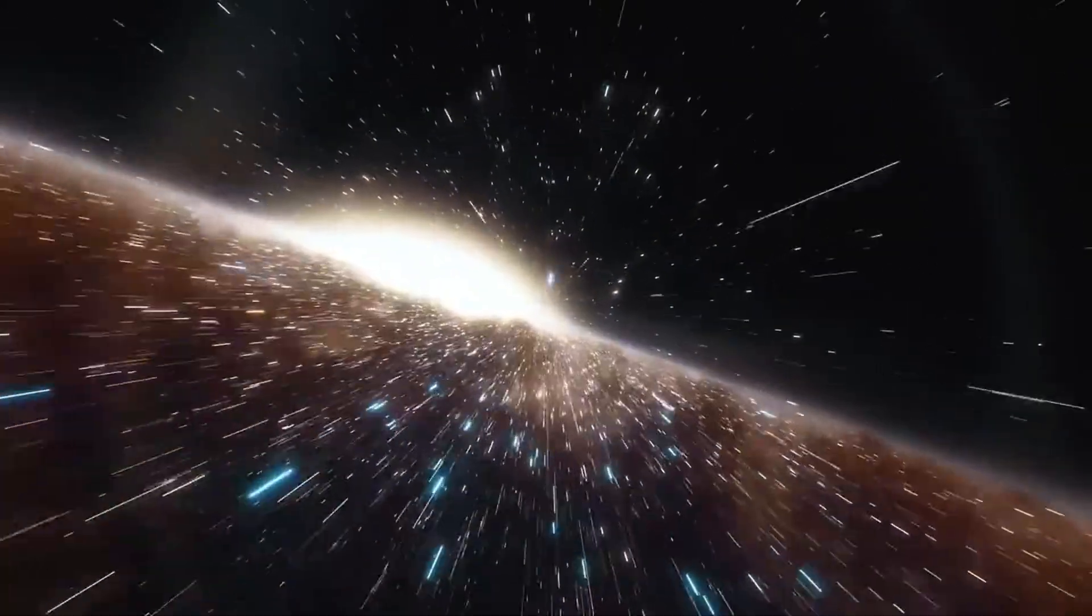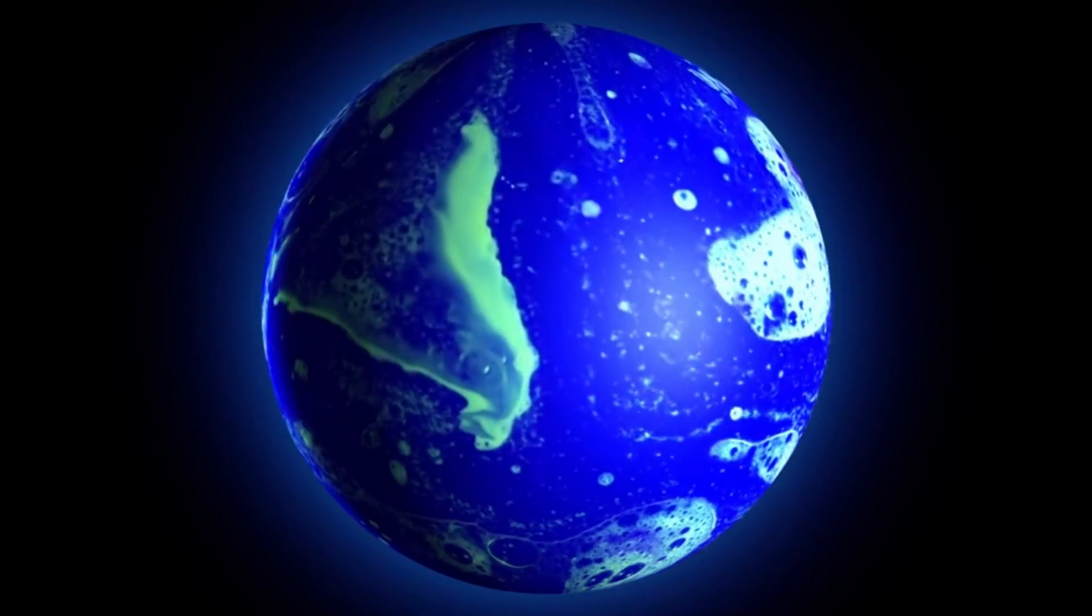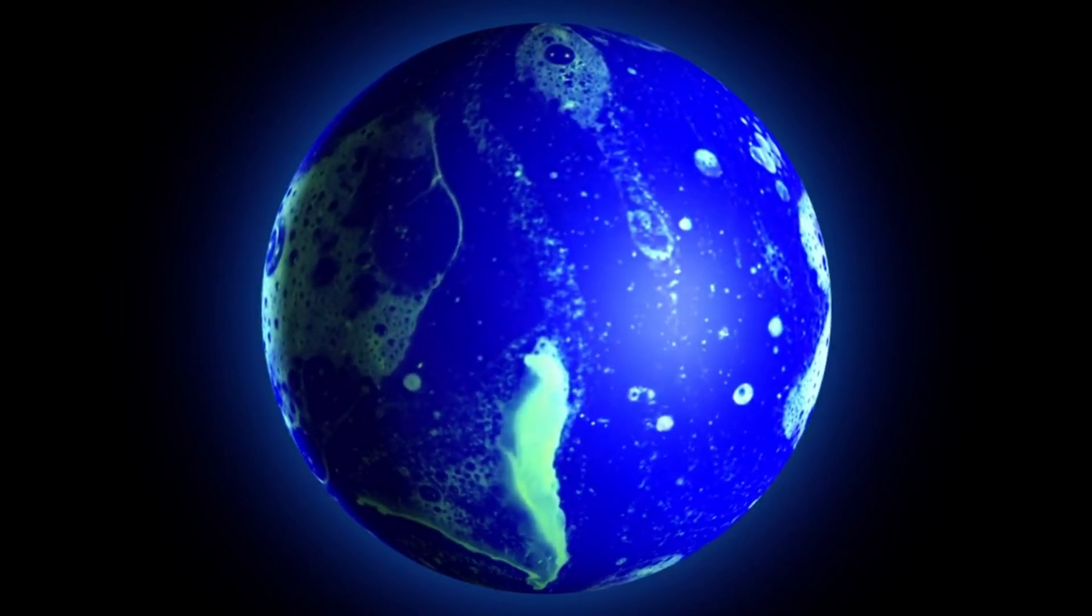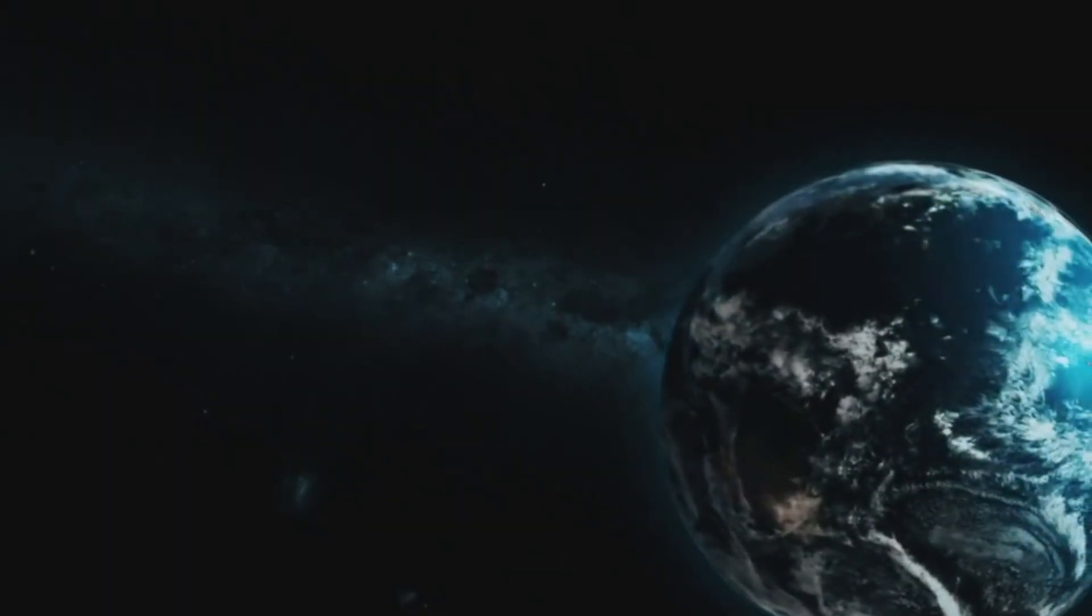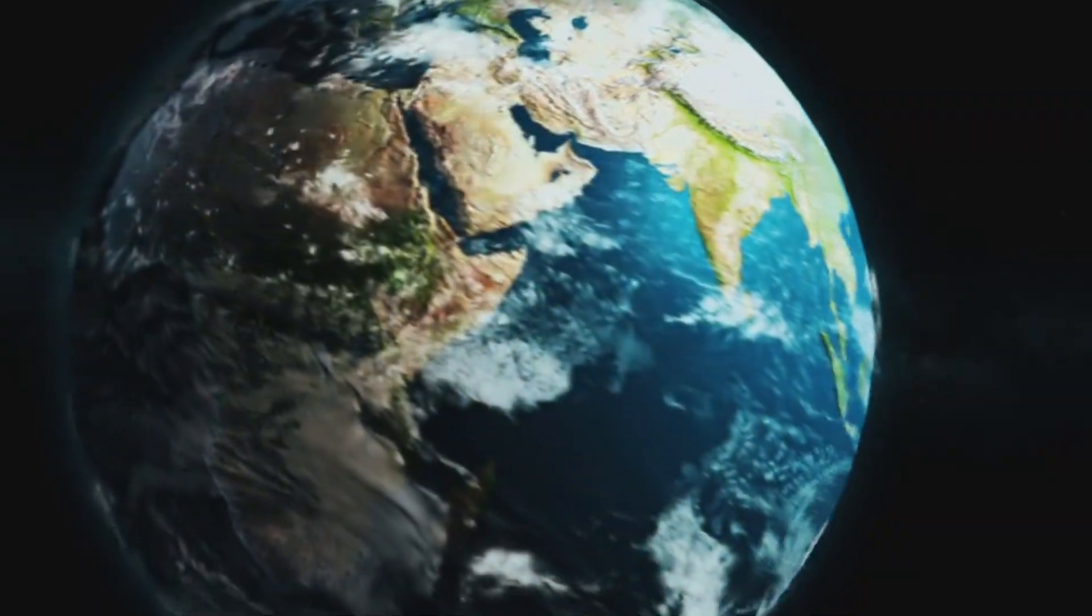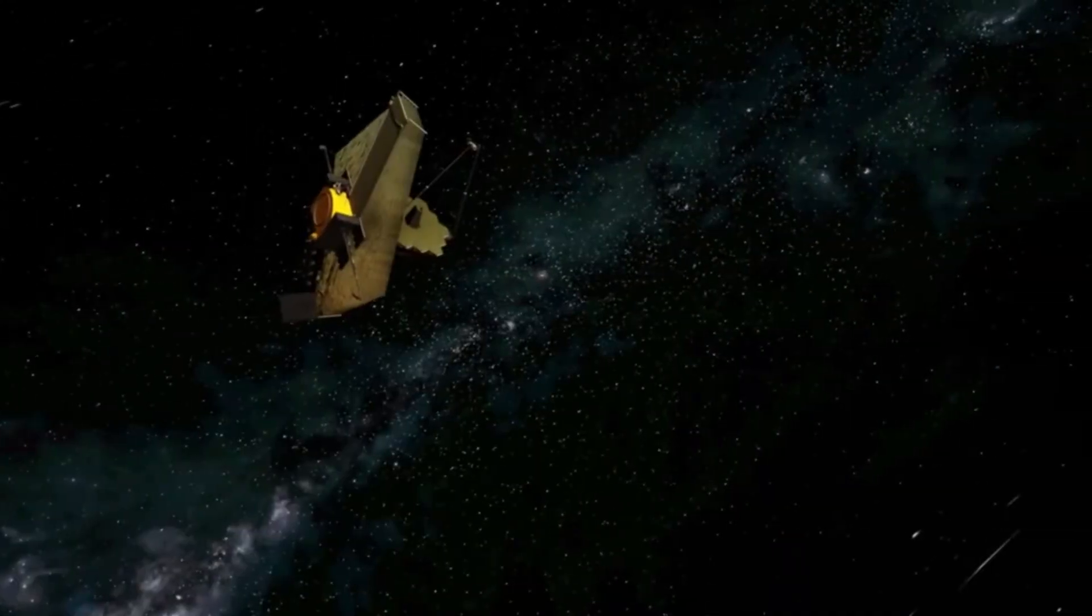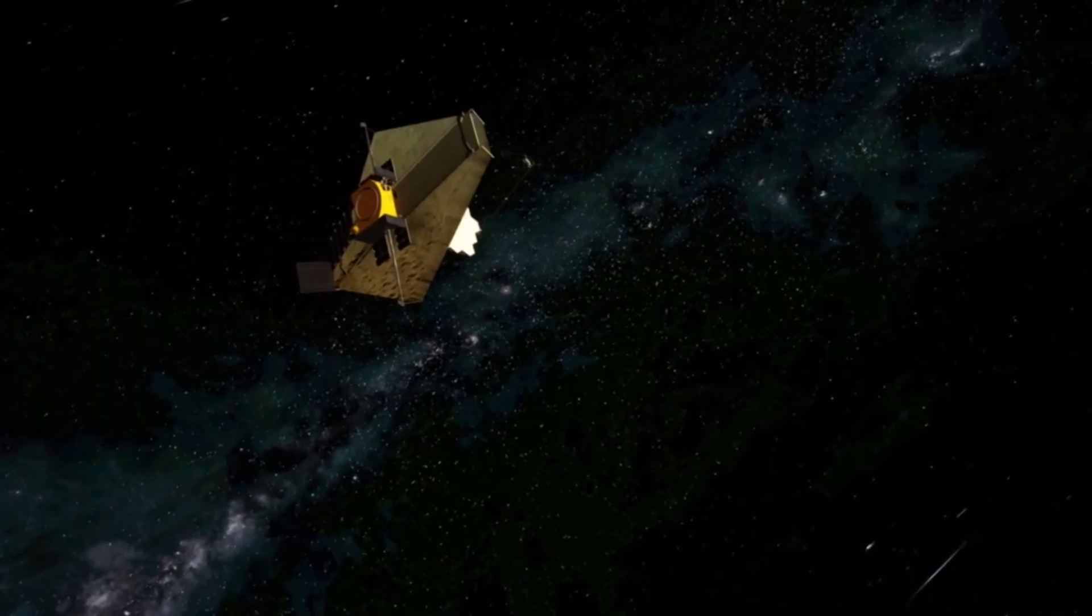Naturally, this raises profound questions. What would life look like on a planet without land? Could life even emerge and evolve in an environment completely dominated by oceans, without the geochemical diversity that land masses provide? JWST isn't answering those questions outright, but it is giving us the data that will help guide future missions and models.